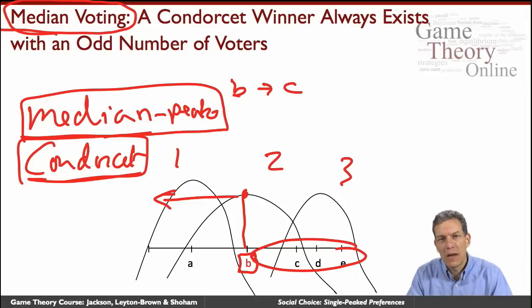Moreover, this is going to have nice properties in terms of people misrepresenting their preferences. So could two improve by changing their ordering? No. Their alternative is picked, right? B, their favorite ordering.